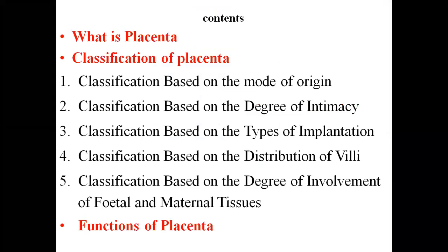Before starting this chapter, let's discuss its contents — which topics we need to cover according to your syllabus. Under Placentation in Mammals, first is: what is placenta? Then classification of placenta — based on mode of origin, degree of intimacy, types of implantation, distribution of villi, and degree of involvement of fetal and maternal tissues. The last topic is functions of placenta.